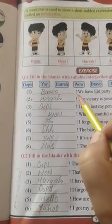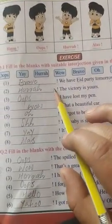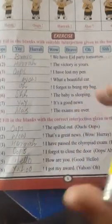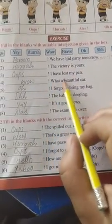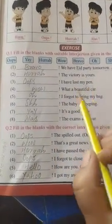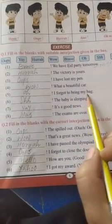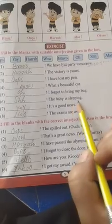First one is we have a party tomorrow. Here we use bravo. Bravo, we have a party tomorrow. Second, hurrah, the victory is yours. Third, oops, I have lost my pen. Fourth, wow, what a beautiful card. Fifth, oh, I forgot to bring my bag. Sixth one is shh, the baby is sleeping.